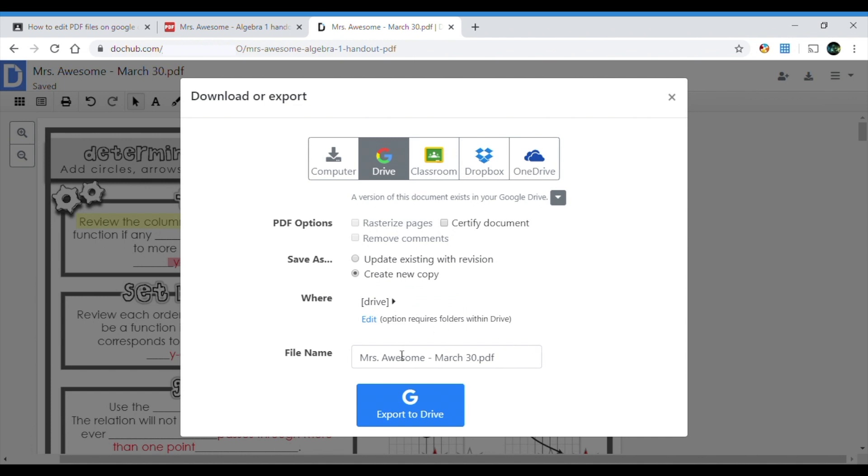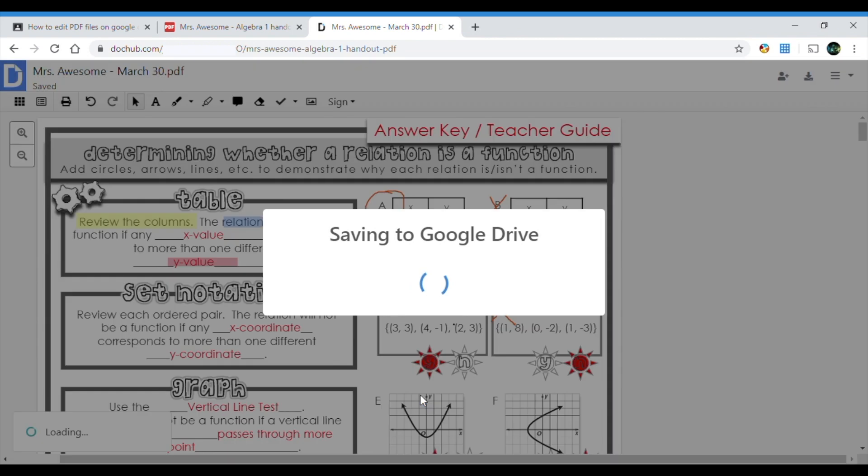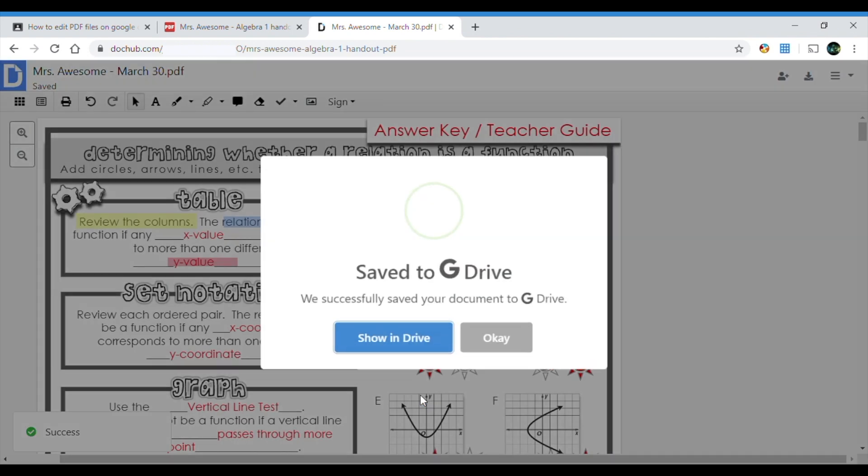And as you can see, it's gonna say your name, Mrs. Awesome and then March the 30th. So it renamed it to whatever you changed it on the document in the beginning. So I'm gonna go ahead and export it to Google Drive. As you can see, it's doing that.